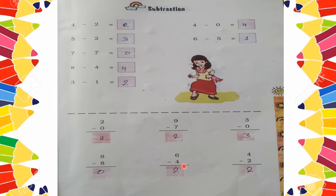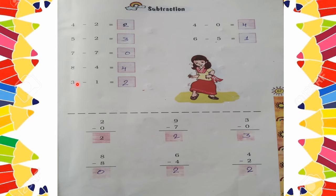Next is 6 minus 4. You have 6 pencils: 1, 2, 3, 4, 5, 6 — and someone takes away 4: 1, 2, 3, 4. So how many are left? These 2 pencils. So the answer will be 2. 6 minus 4 is equal to 2. Next is 4 minus 2. You have 4 pencils: 1, 2, 3, 4 — and someone takes away 2 pencils. So how many are left? Only these 2 pencils. So 4 minus 2 is equal to 2. Clear class?